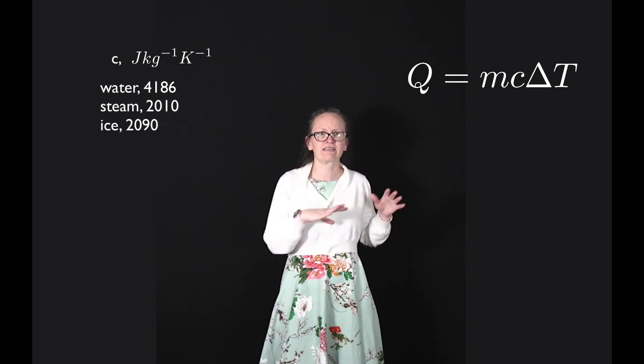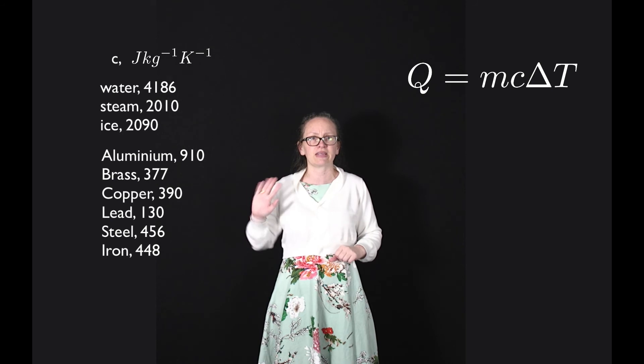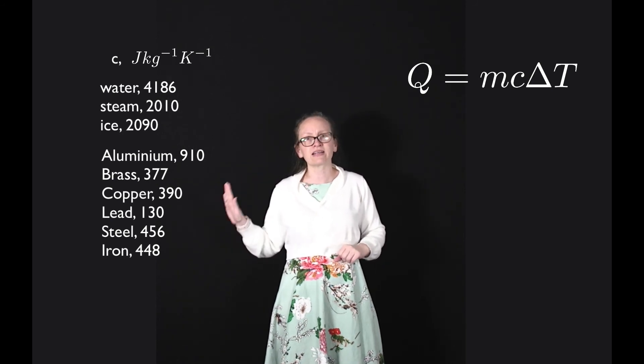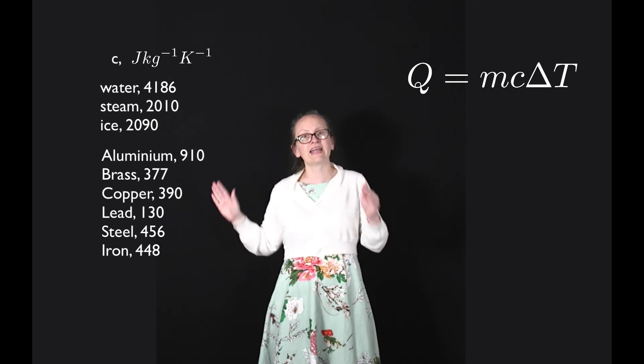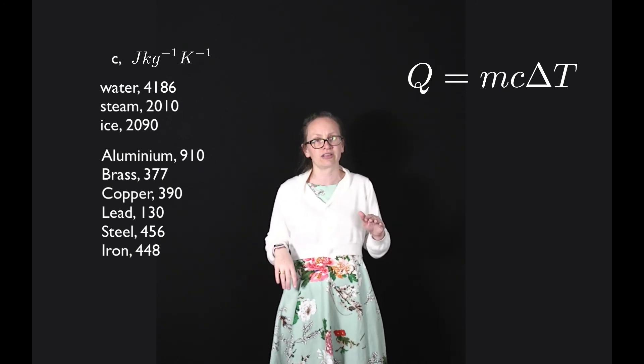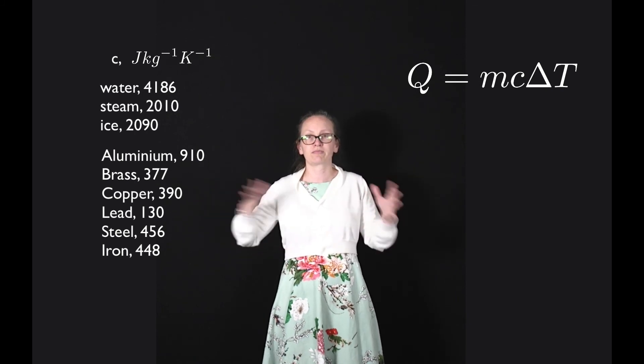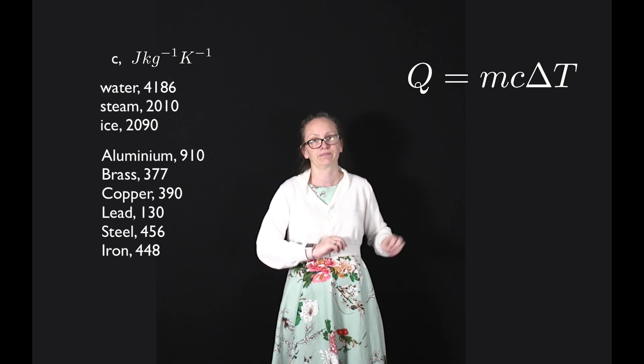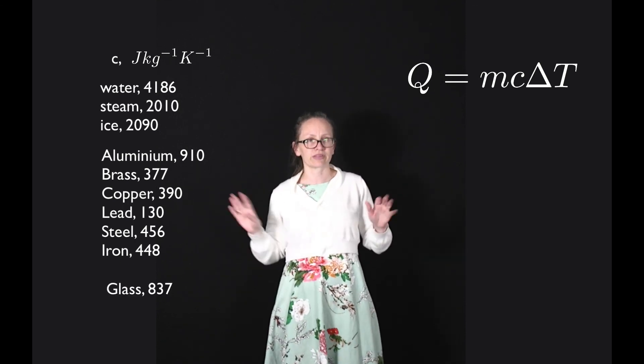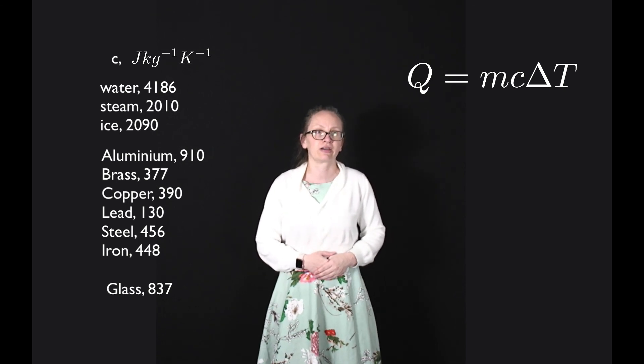Metals tend to have relatively low specific heats. Some common metals: we've got aluminum with 910, brass 377, copper 390, lead is particularly low at 130, steel is 456, and iron, which forms a major component of steel, is very close to that at 448. Glass is another example, not a metal, and it's got a specific heat of 837.